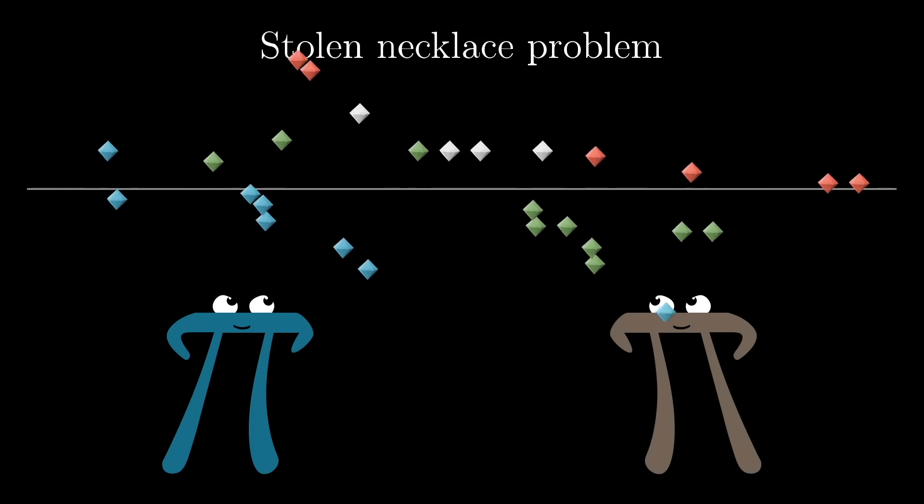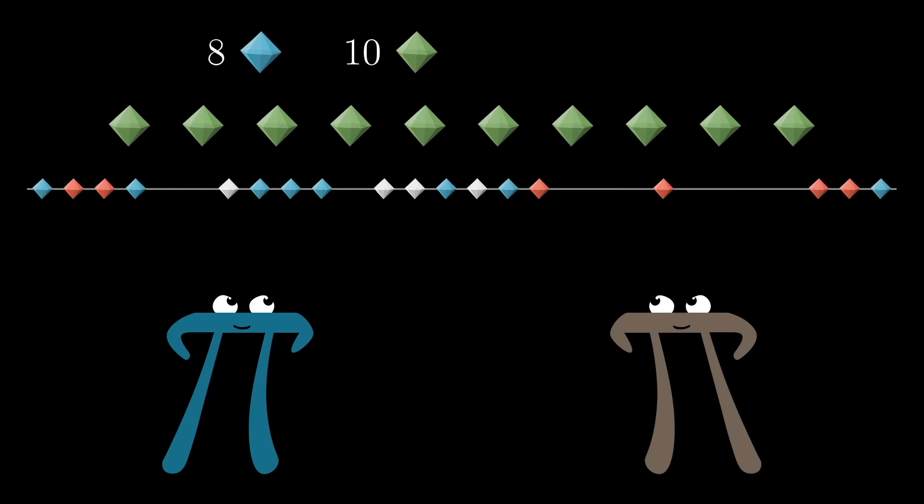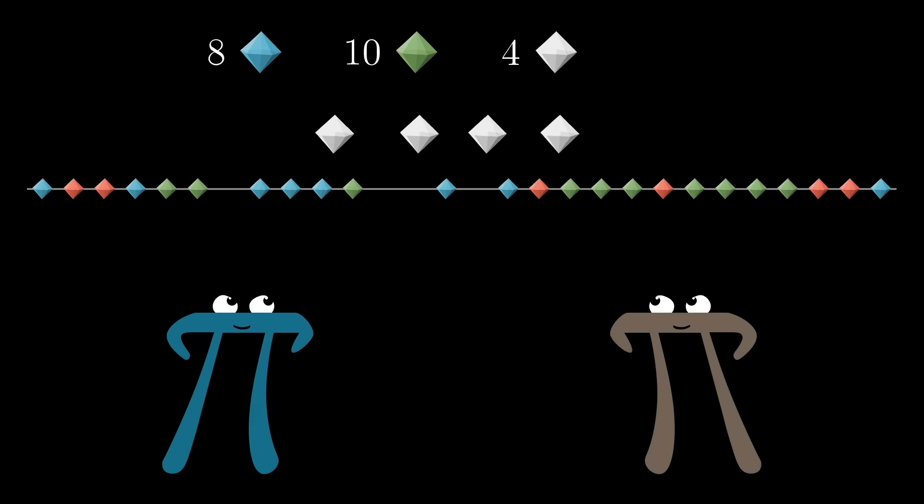They're all arranged on the necklace in some random order. And let's say that it happens to be an even number of each type of jewel. Right here I have eight sapphires, ten emeralds, four diamonds, and six rubies.